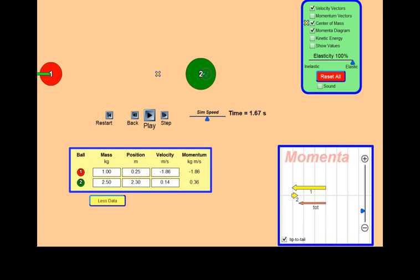Notice that this time, while both objects rebounded, the second object's change in velocity was a lot less.